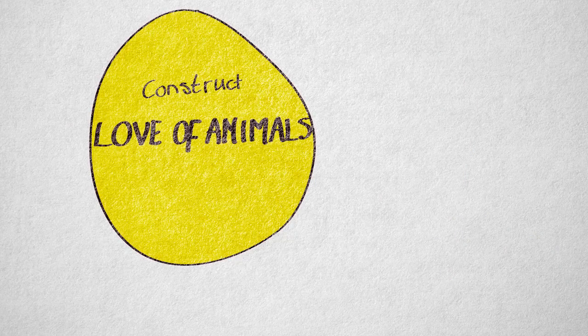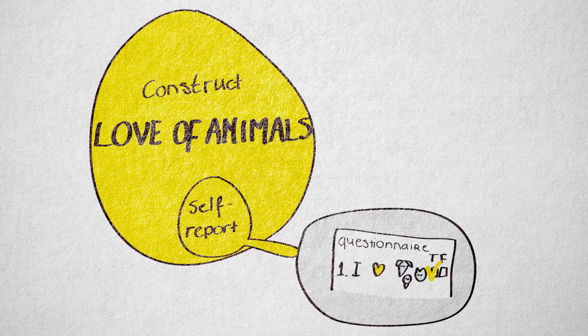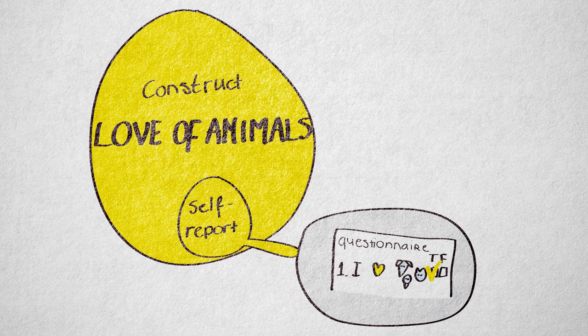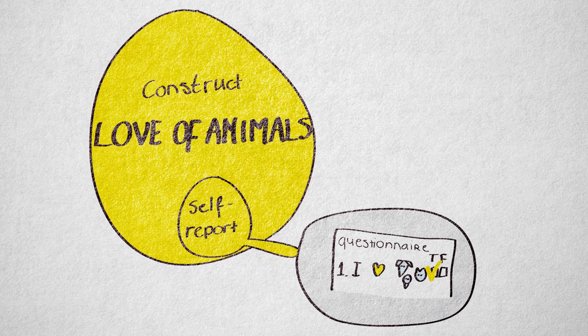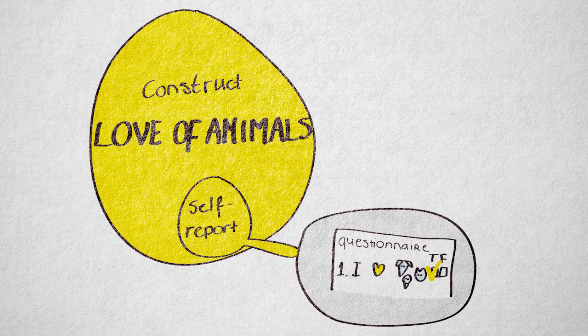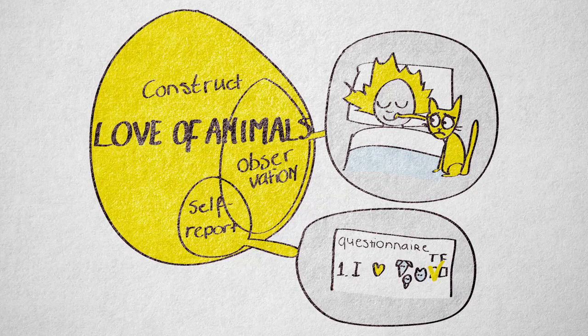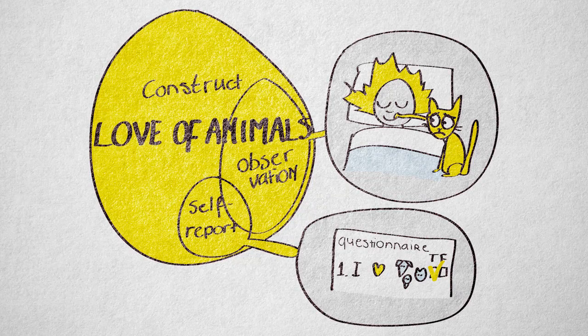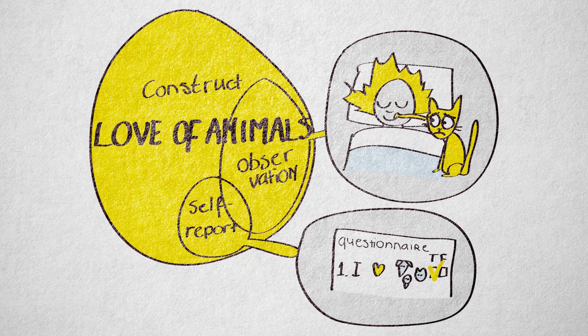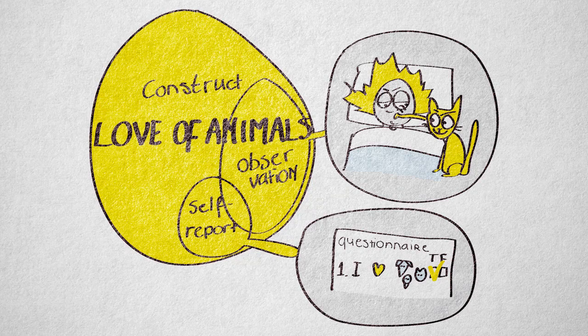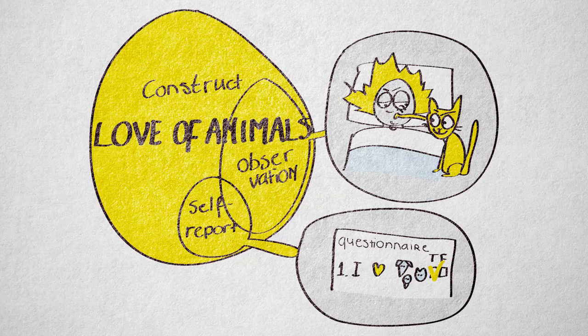For example, if we measure a love of animals with a self-report questionnaire, we measure feelings and attitudes, which might give a more positive image. If we measure love of animals by placing cameras in people's homes and observing behavior, we might find lower scores. We might find that compared to their self-reported love of animals, people show a lot less love when their cat wakes them up at 5 a.m. or blocks the TV when they're watching their favorite show.